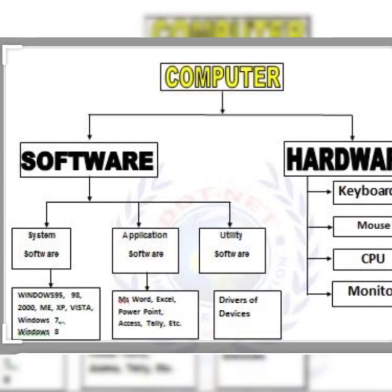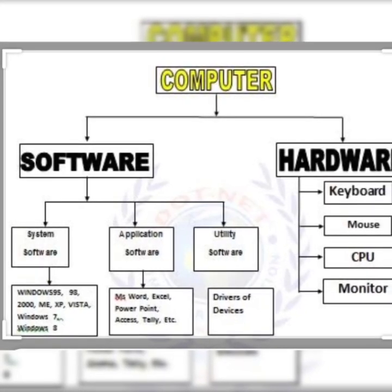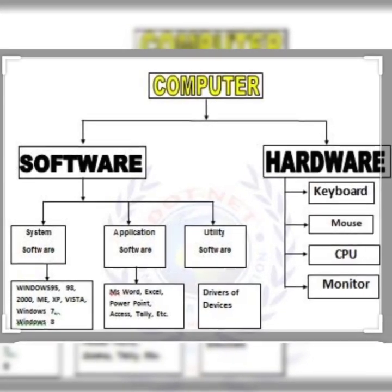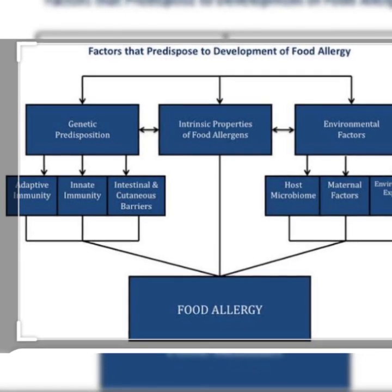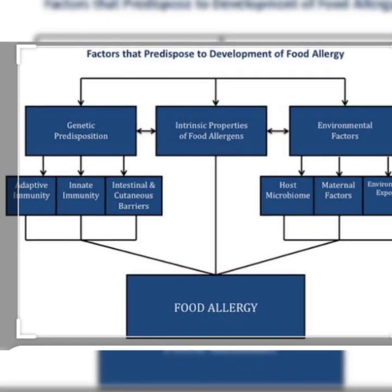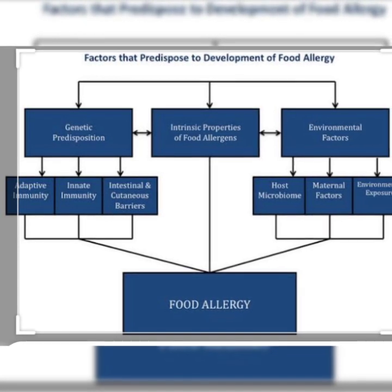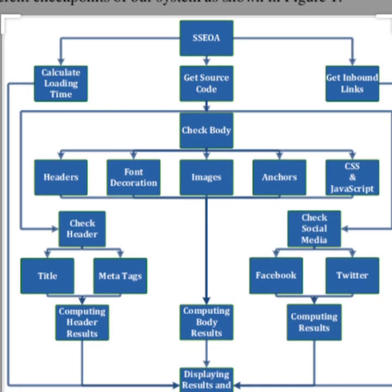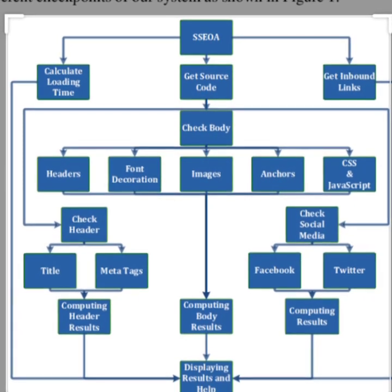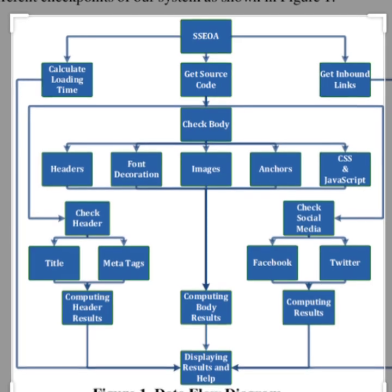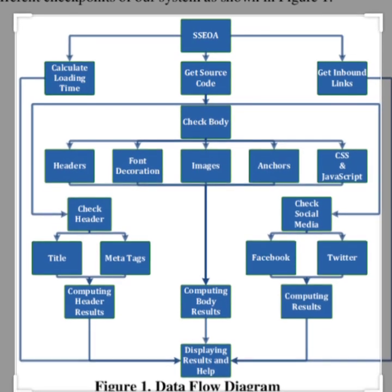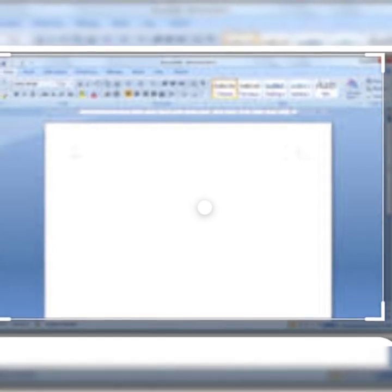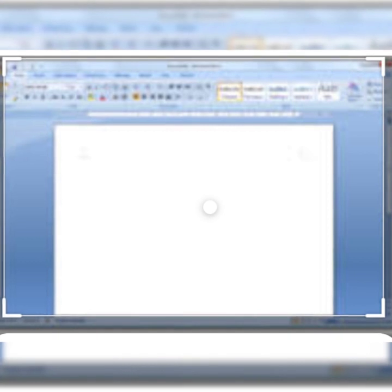All documents in Writer are based on pages, since a document has a number of pages and formatting them is very necessary. We use page style for the basic layout — page size, its margins, placement of header and footer, footnote, borders, background, etc. These are the formats we apply in page style.